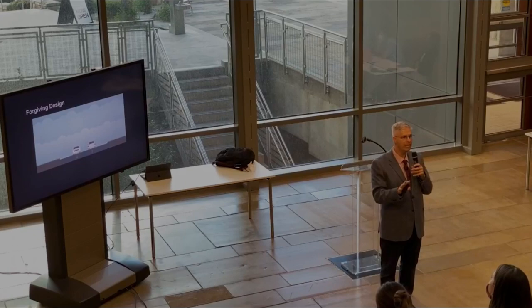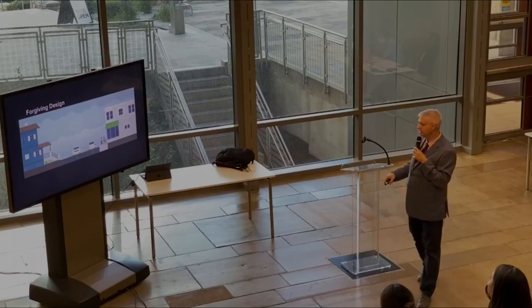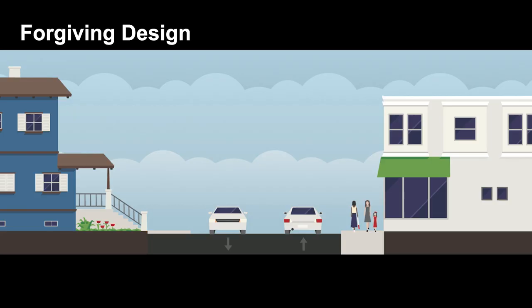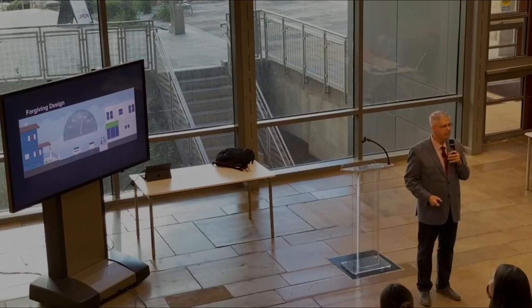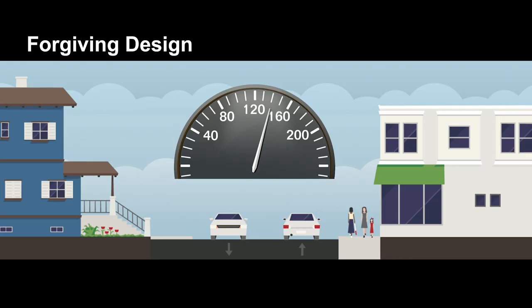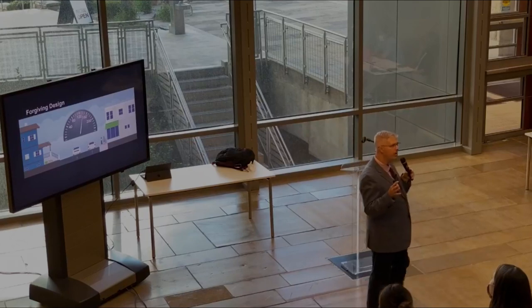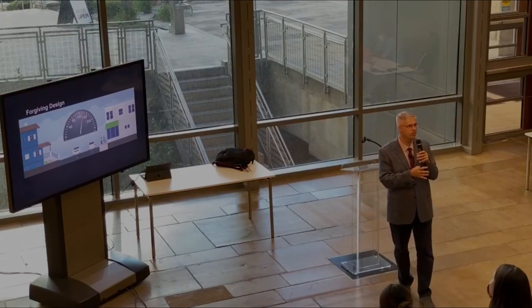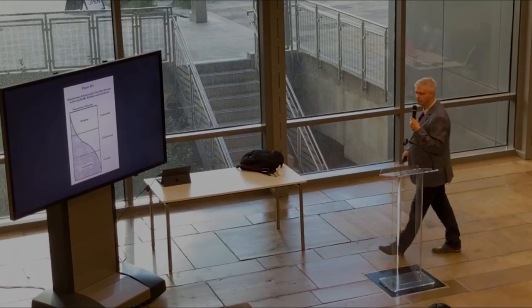On our roads, this has saved millions and millions of lives. And it is a genius approach. And engineers should be applauded for recognizing that they can design things to adapt to human behavior. The problem is, is that when we get into our streets, this kind of design is dangerous. It does not adapt to our human behavior. In fact, it does the opposite. It takes drivers and it licenses them to drive more quickly. It licenses them to speed. Because it signals to them that, hey, we've taken care of all the problems. You don't have to worry. We've created all this buffer room for you. When we bring forgiving design principles into our streets, we're doing a disservice to our neighborhoods and we're creating places that are dangerous.